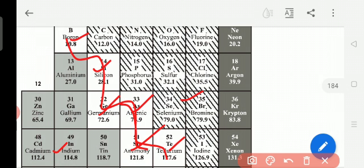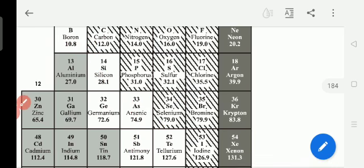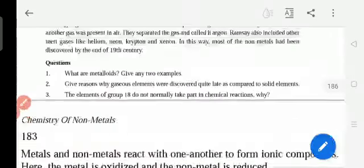Two examples are boron, silicon, germanium, arsenic, antimony, tellurium, and so many are there.